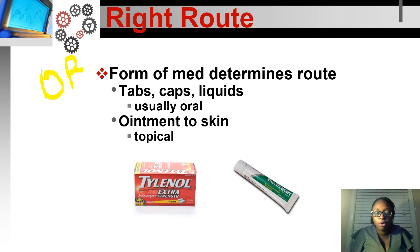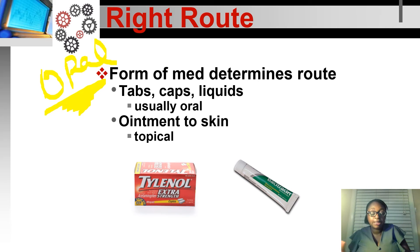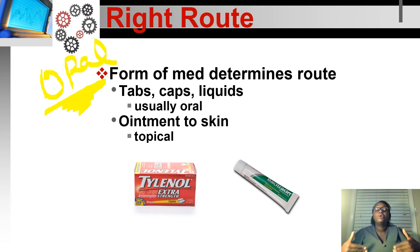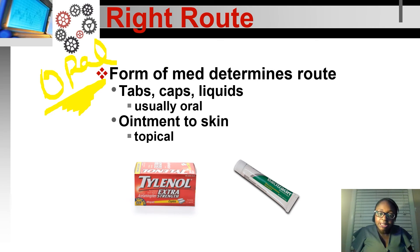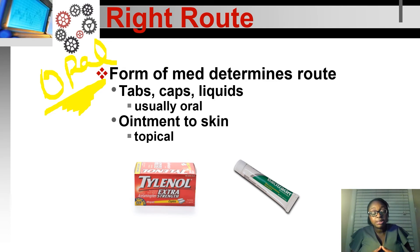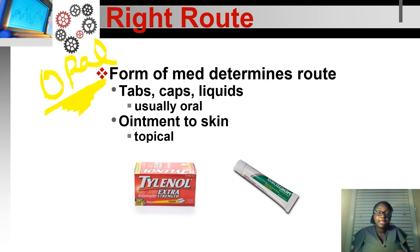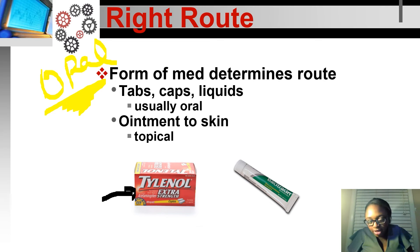For the right route: this MAP class certifies you to administer oral medications only. After successfully completing this class and passing the state exam, you can give oral medications. That doesn't mean your training is complete for any other route — the nurse at your facility has to train you on those. Other routes include topical ointments, eye drops, and ear drops.